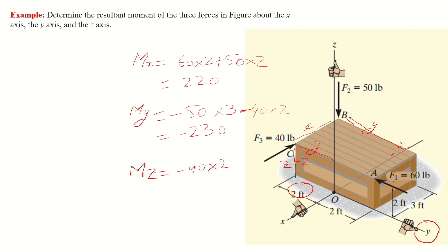Then we look at F1, which is along the y-axis. It should have an x-distance, but as you can see it is passing through the origin and does not have any x-distance. Therefore, the y-force multiplied by zero x-distance means F1 will not produce any moment about the z-axis. So the moment about the z-axis equals negative 80.